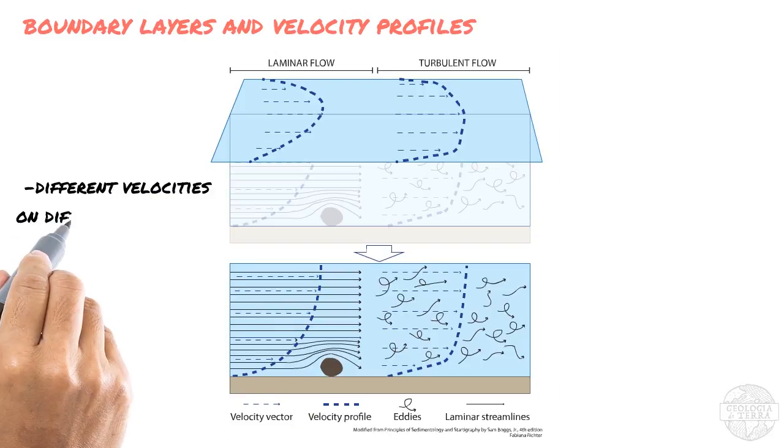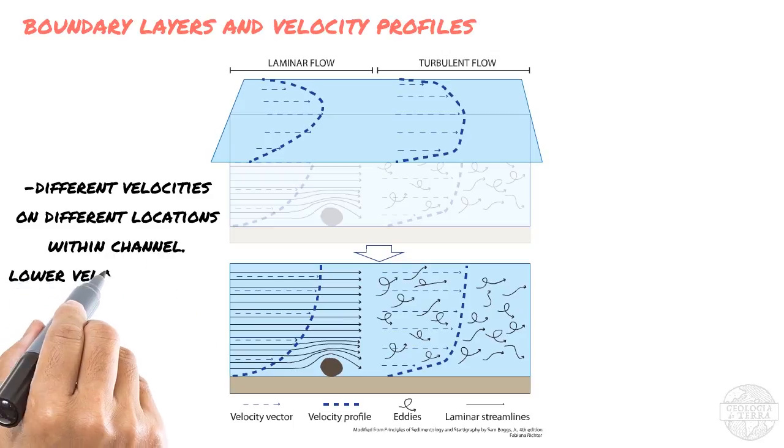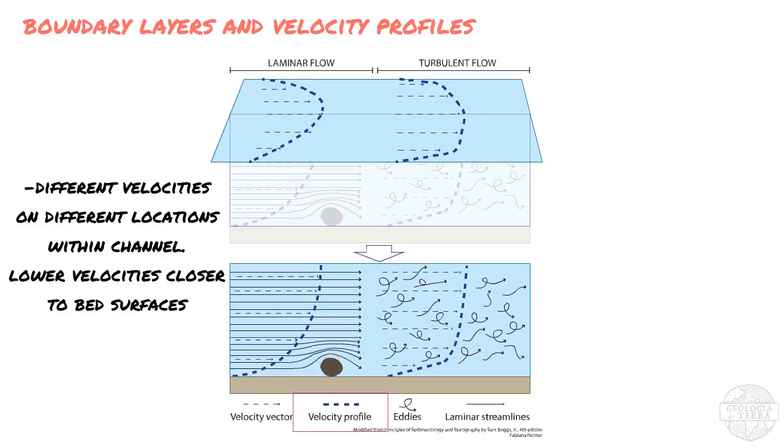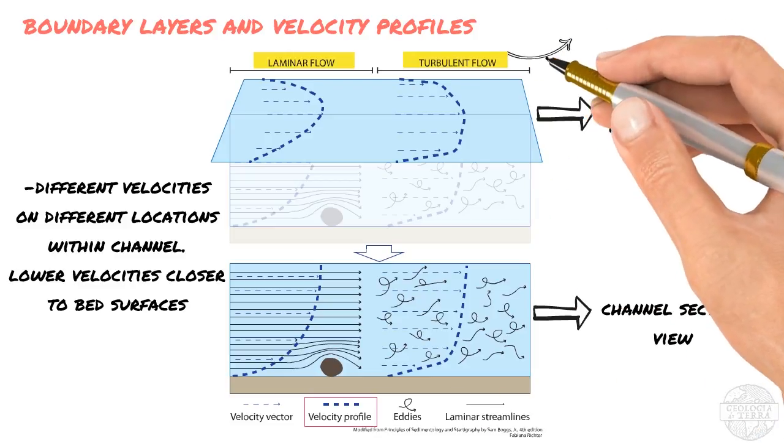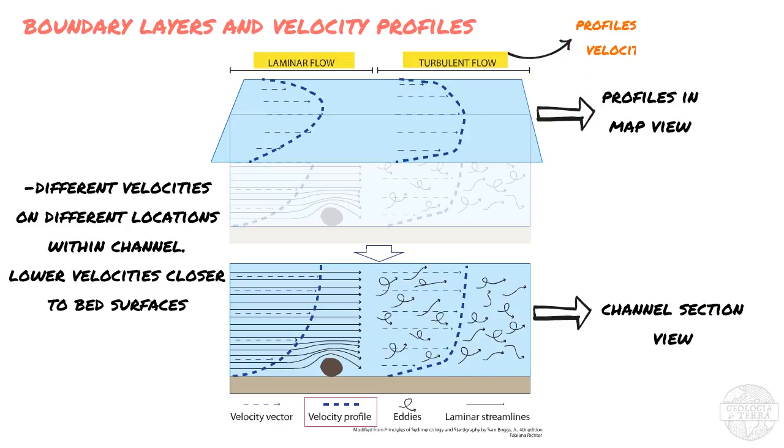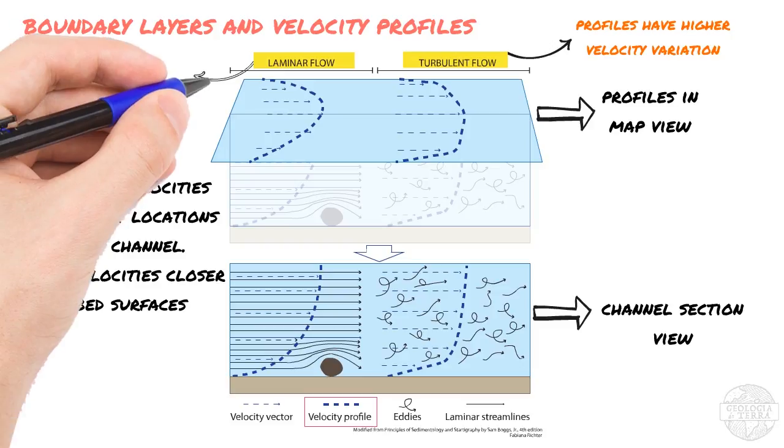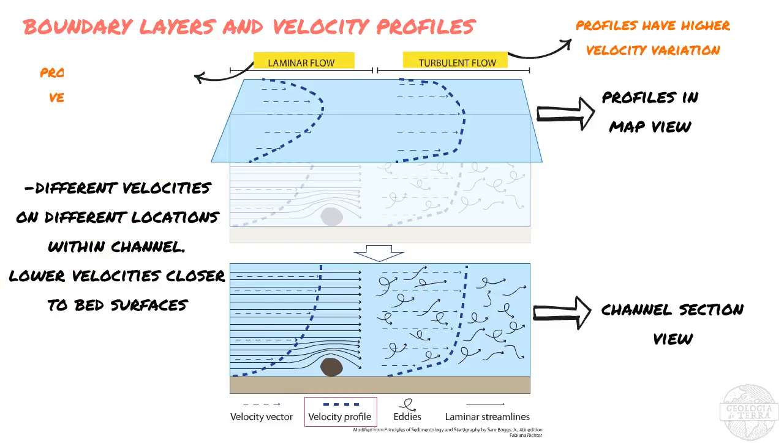Now, because of all of that, the rate at which water flows will be different at different locations of the channel according to the proximity of these locations to the bed surface. This allows us to plot velocity profiles of the flow in a channel, which will be smaller the closer the flow is to the bed. And these profiles will be different in laminar and turbulent flows. In a laminar flow, the variation of velocities in a profile will be much greater than the variation of velocity in a turbulent flow.